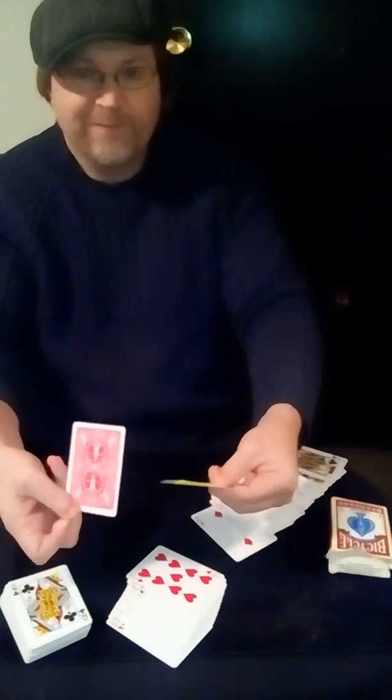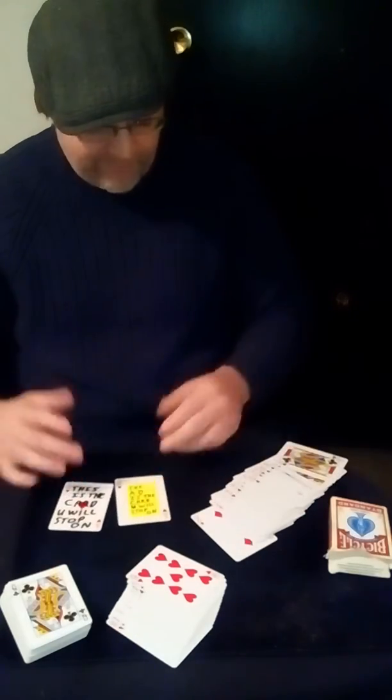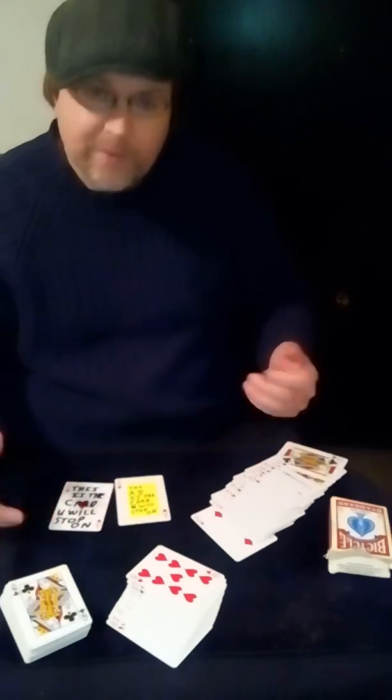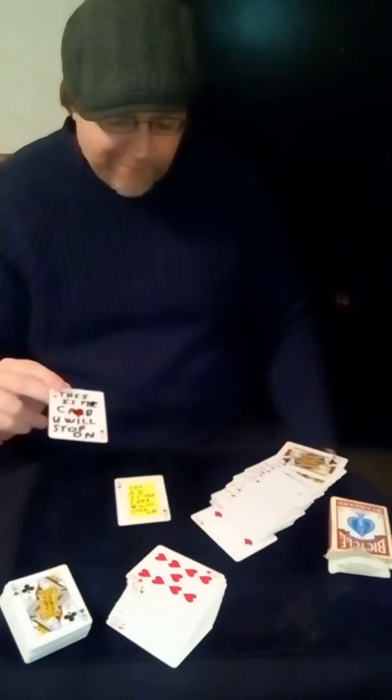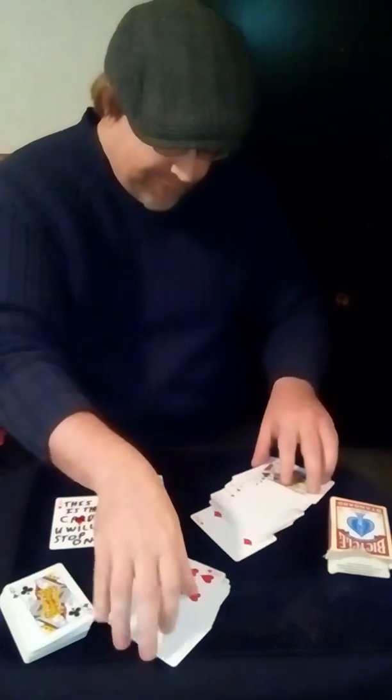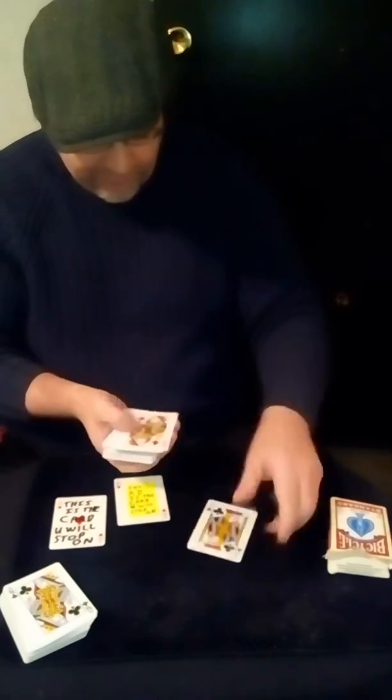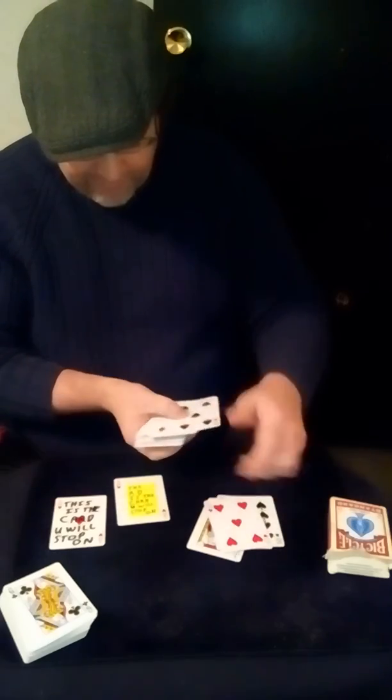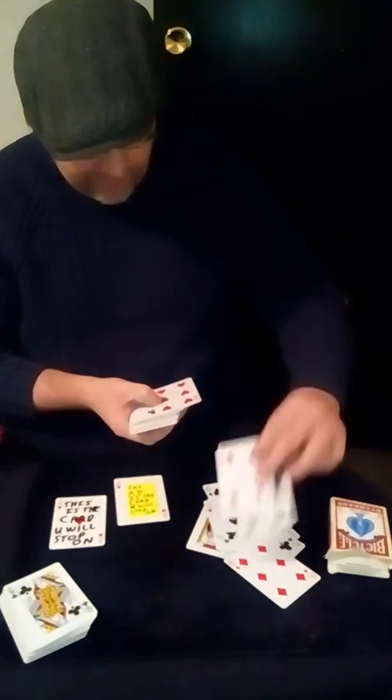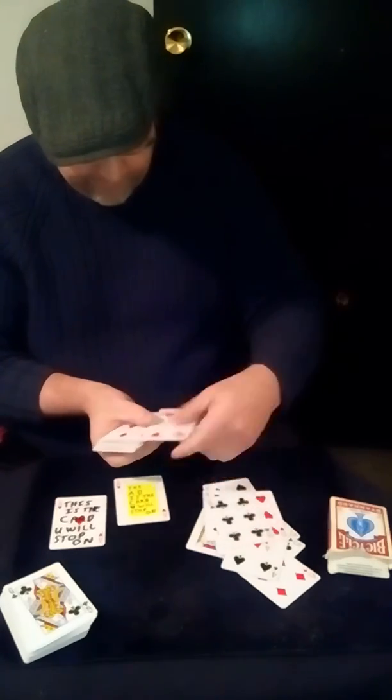So this is what happened. I started with the blue deck. I cut the card anywhere. I cut to the Queen which happened to be in the twelfth position. I counted twelve cards down. It happened to be the ace of hearts. This is the card you will stop on. And then I went back to the blue deck. That's the only one that has anything written on. Look, nothing has any kind of post-it note on it except that one right there.